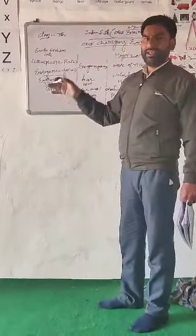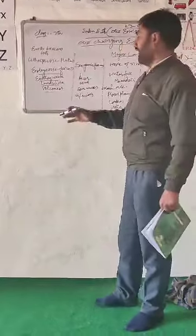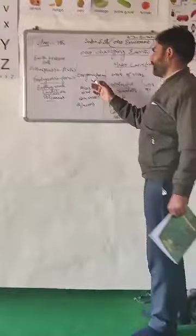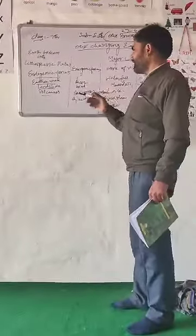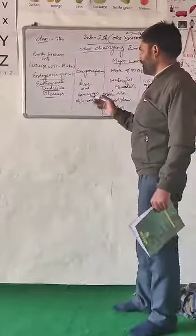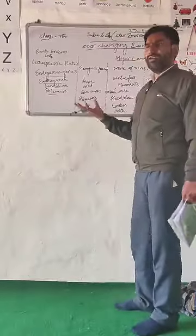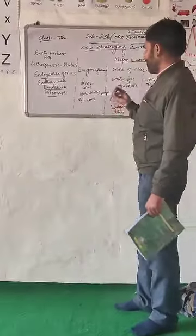On the surface of the earth, there are exogenic forces — for example, rivers, wind, sea waves, and glaciers. These are the forces that act on the surface of the earth.